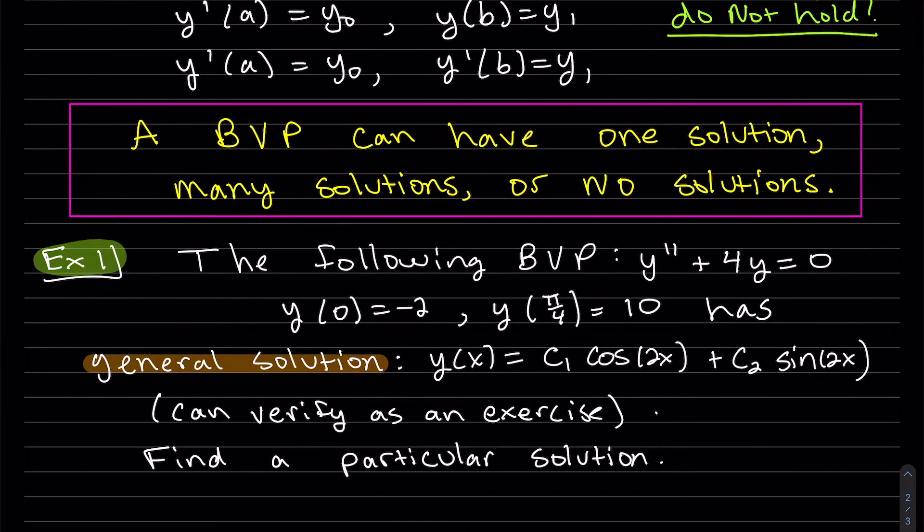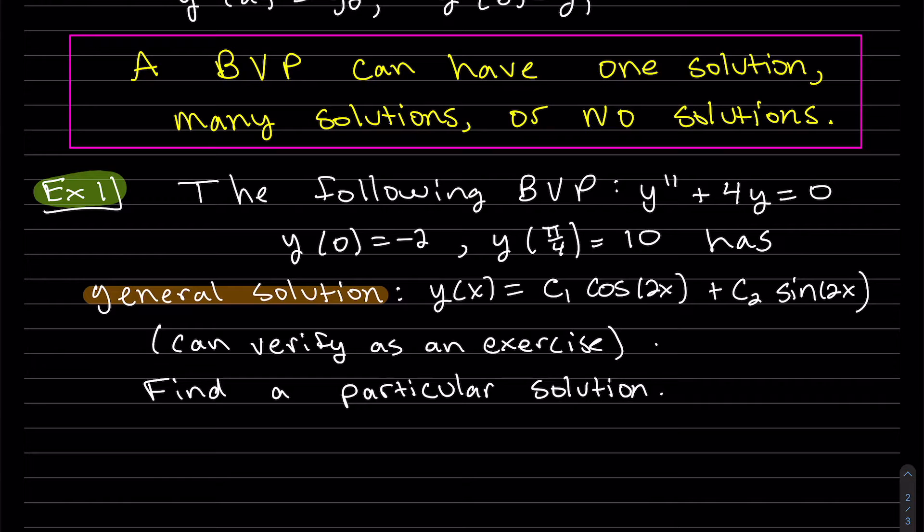So the following boundary value problem has the two initial conditions. And I've written out the general solution. So it is second order. So we have two arbitrary constants. And we can verify that this is a general solution. And you can do that as an exercise. We would just take the second derivative of this and plug it in here and then plug this y in here and show that it's equal to zero, that it's a true statement. So let's find a particular solution using those boundary conditions.